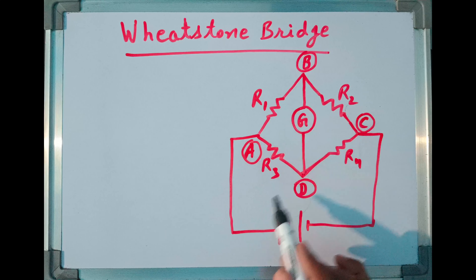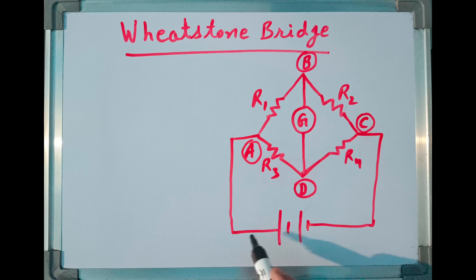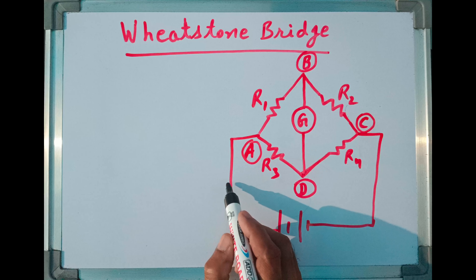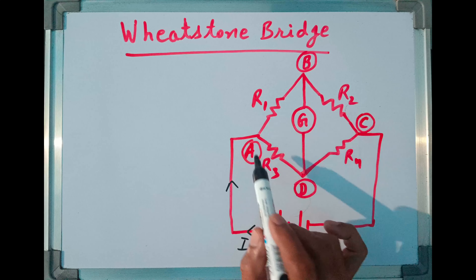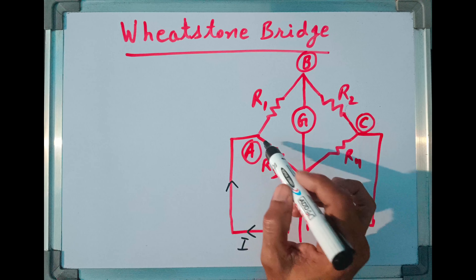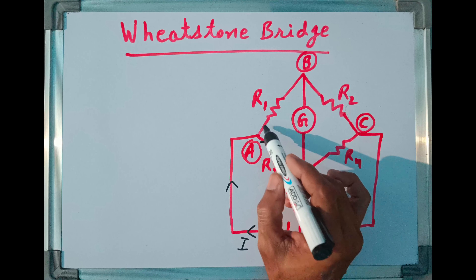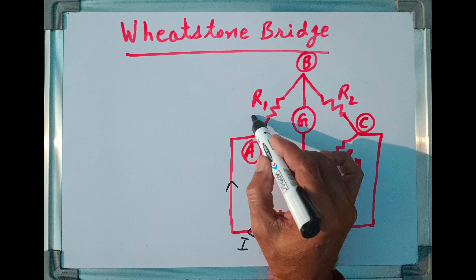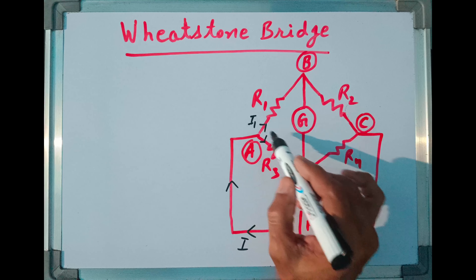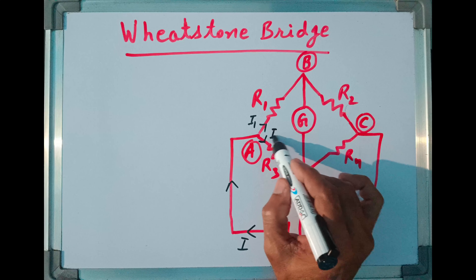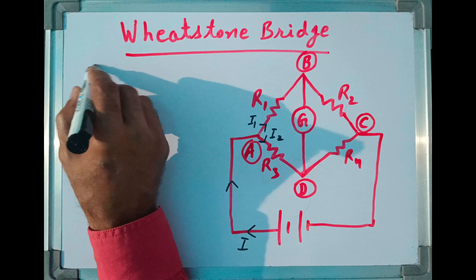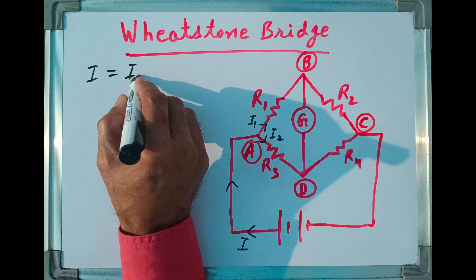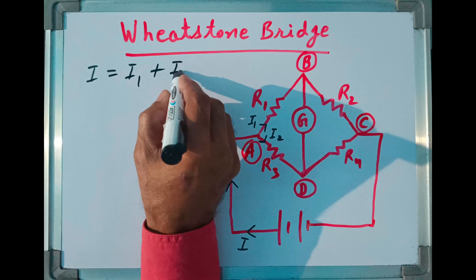Suppose this bridge is connected to a battery from which current I is flowing. Suppose current I starts from positive of the battery. When it reaches junction A, it gets split into two parts. Let us suppose I1 current goes towards R1 and I2 current goes towards R3. Mathematically, I can write I is split into I1 and I2.